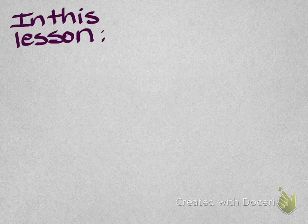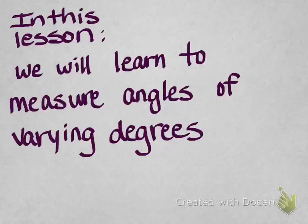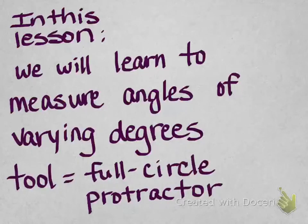So in this lesson, we are going to learn to measure angles of varying degrees, and varying means just different degrees. Our tool to do this is going to be a full circle protractor.